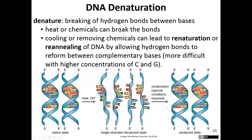Denaturation for DNA means breaking those hydrogen bonds. You can see adenine and thymine bound together and cytosine and guanine bound together, and when they break apart, that's a denatured DNA strand. They can then re-anneal together. Denaturation typically occurs when you heat the DNA, and cooling it allows it to re-anneal or re-nature.